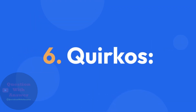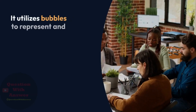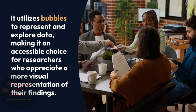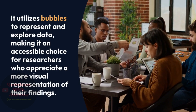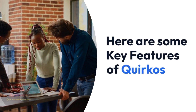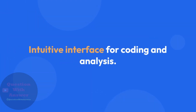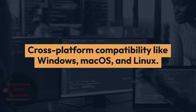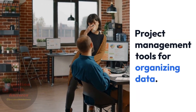6. Quirkos. Quirkos is a qualitative data analysis tool known for its simplicity and visual approach. It utilizes bubbles to represent and explore data, making it an accessible choice for researchers who appreciate a more visual representation of their findings. Key features include: bubble visualization for data exploration, an intuitive interface for coding and analysis, cross-platform compatibility for Windows, macOS, and Linux, and project management tools for organizing data.